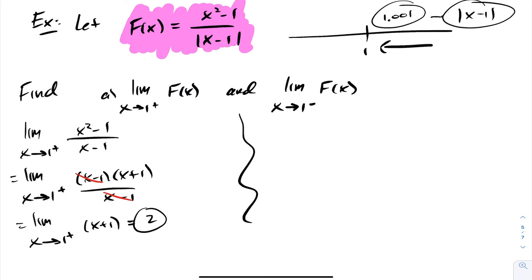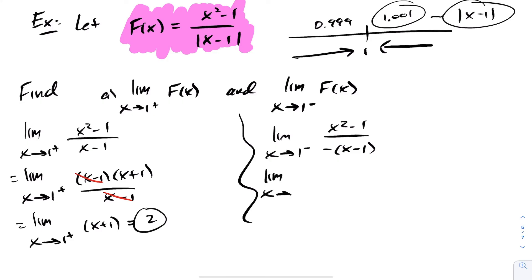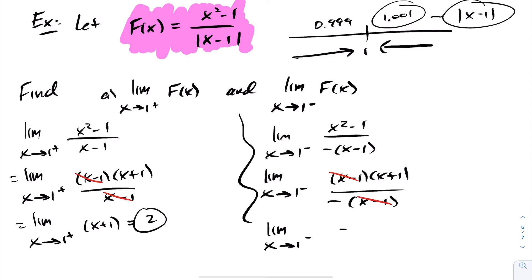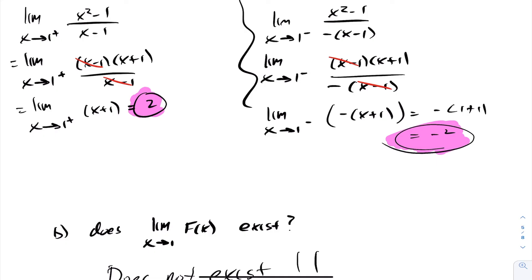Approaching 1 from the left-hand side, values like 0.999 make (x - 1) negative, so dropping the absolute value requires multiplying by negative 1. This gives the limit as x approaches 1 from the left of (x - 1)(x + 1) over negative (x - 1). The (x - 1) factors cancel, leaving the limit of negative (x + 1). Substituting x = 1 gives negative 1 + 1 = negative 2. The limit from the right is 2 and from the left is negative 2 — they're not equal — so the limit does not exist.